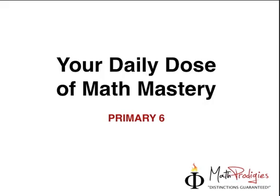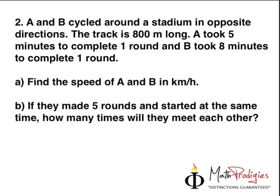Question number two is: A and B cycle around the stadium in opposite directions. The track is 800 meters long, so that's your distance.